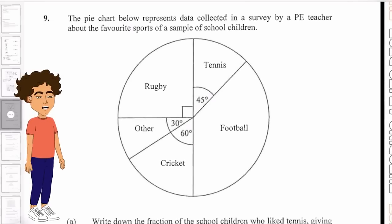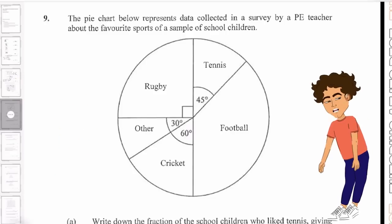Let's now move over to question nine. The pie chart below represents data collected in a survey by a PE teacher about the favorite sports of a sample of school children. Write down the fraction of the school children who liked tennis, giving your answer in its lowest form.